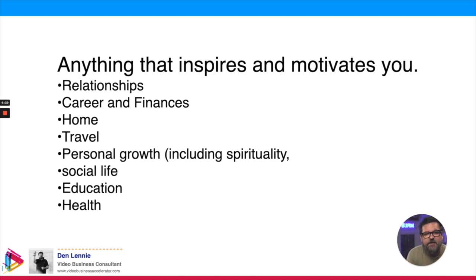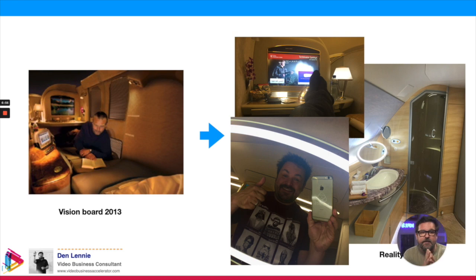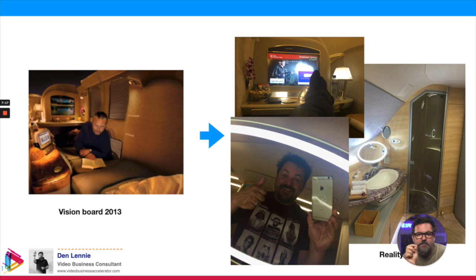Spend some time thinking about what you want. I'll often meditate before I create a vision board, because I want to be in a relaxed, calm space where I can start to think ambitiously. In 2013 I put this random picture of a guy in what looks like first class in Emirates, and by 2016 I had actually flown in that very first class cabin and took a shower in an Airbus A380 over Bulgaria — it was mind-blowing. I flew to Amsterdam with Sony, they paid for a business class flight and I was able to upgrade to first class.